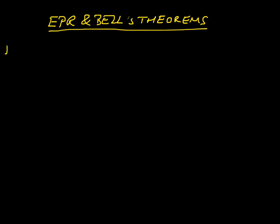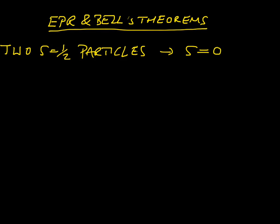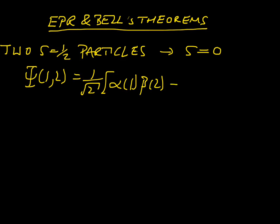So let's start by considering two spin-half particles. We've got two spin-half particles which we are going to join together to make a single S equals zero state. Now the reason we're choosing S equals zero is because that means we're definitely in the singlet. And so we would write a combined wave function capital Psi of 1, 2 is 1 over root 2, and using slightly unorthodox notation I'm going to write alpha of 1, beta of 2, minus beta 1, alpha 2.